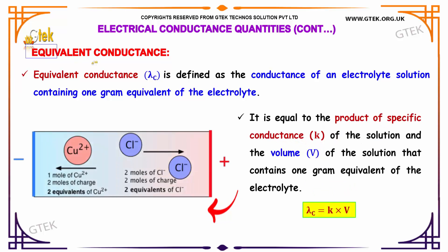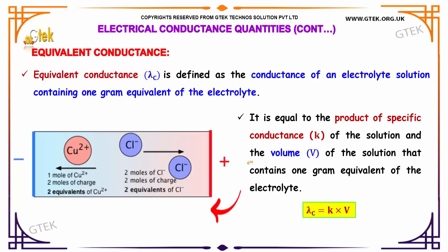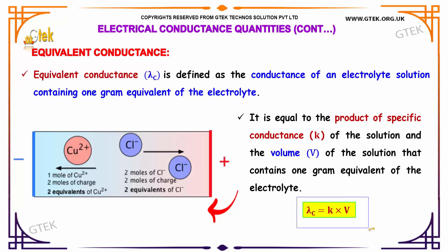Here we are going to discuss equivalent conductance. Equivalent conductance lambda_c is defined as the conductance of an electrolyte solution containing 1 gram equivalent of the electrolyte. It is equal to the product of specific conductance k of the solution and the volume v of the solution that contains 1 gram equivalent of the electrolyte. That is, lambda_c = k × v.